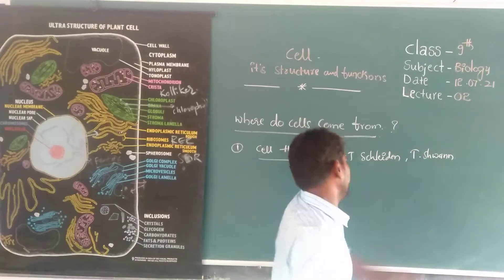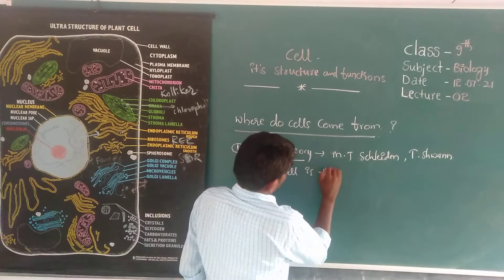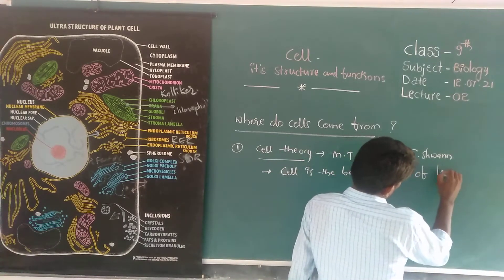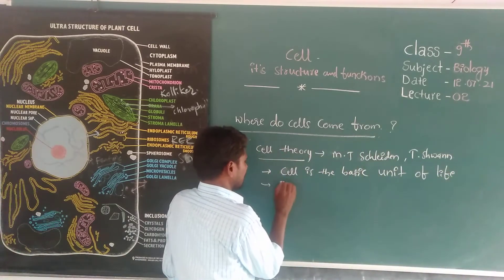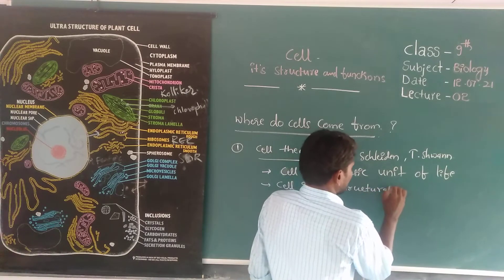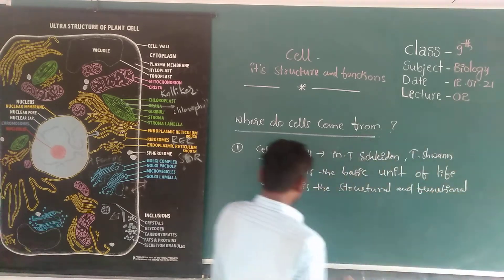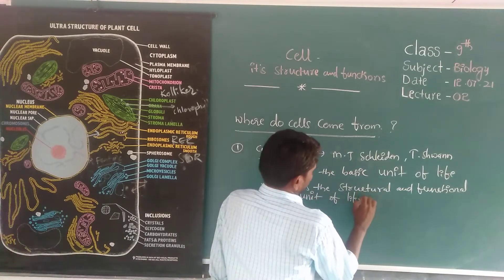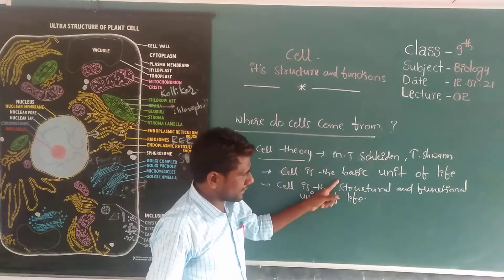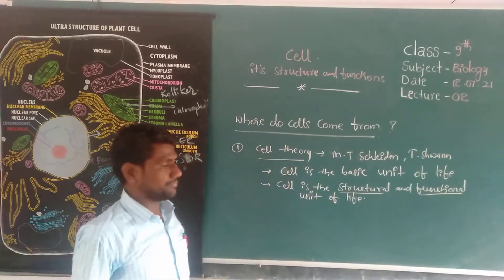According to Schleiden and Schwann, the cell is the basic unit of life. Cell is the structural and functional unit of life. These are the main aspects of cell theory: cell is the basic unit of life, and cell is the structural and functional unit of life.